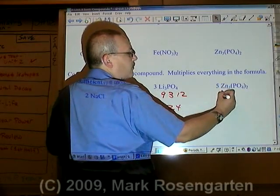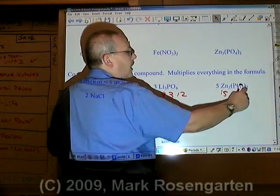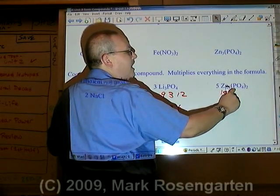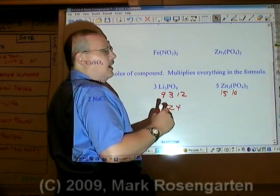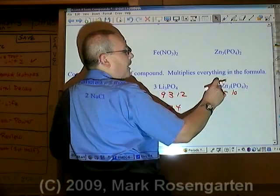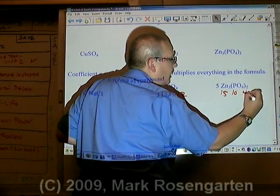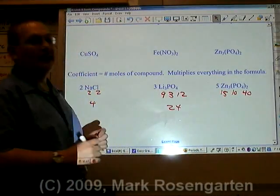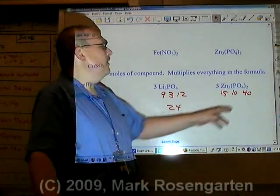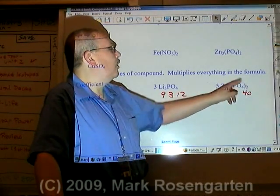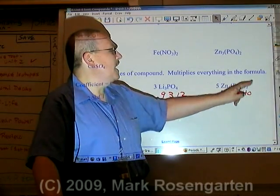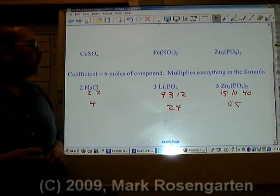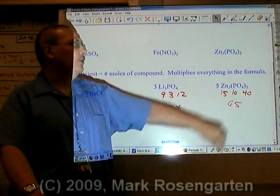Five times three is fifteen zincs, five times two is ten phosphoruses, four times two is eight, eight times five is forty oxygens. That's a lot of oxygens. See what's going on here? There's four times two and that's eight per formula unit, but there's five formula units, five times eight would be forty oxygens for a grand total of sixty-five particles.